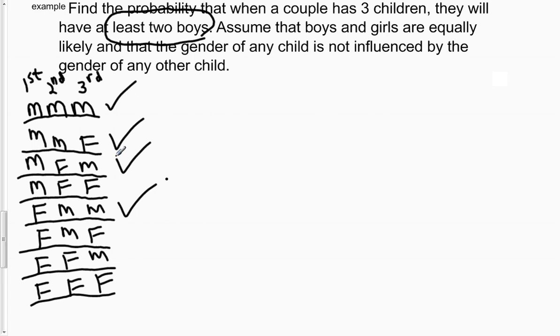So therefore, the probability of having at least two boys. If you look over here, there are a total of eight possibilities for having three children, eight possibilities for the outcomes. And of those eight possibilities, which would be the denominator of the fraction, three out of those eight would be outcomes that are favorable to having at least two boys.